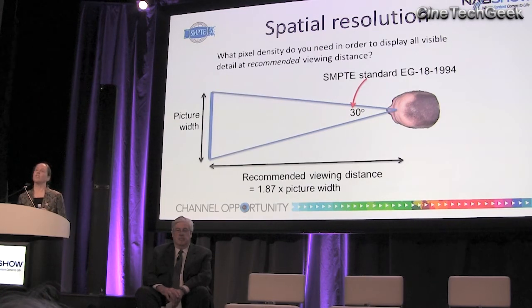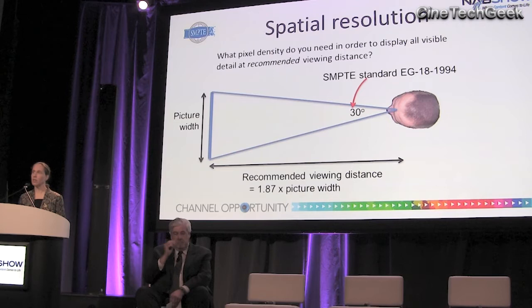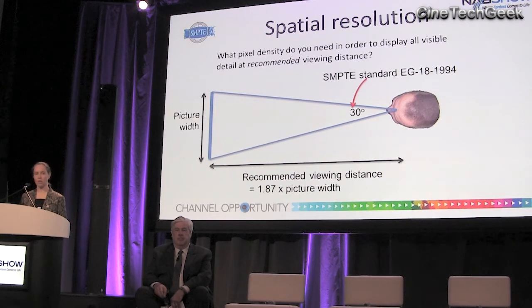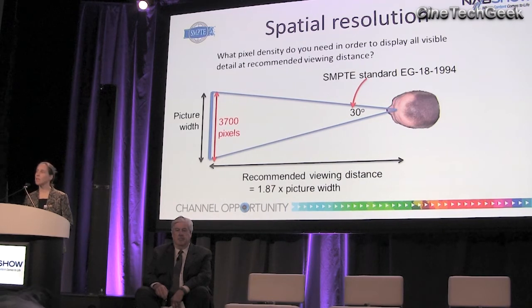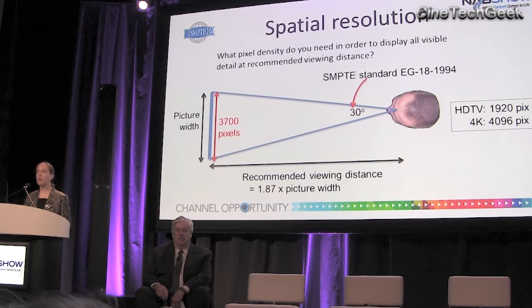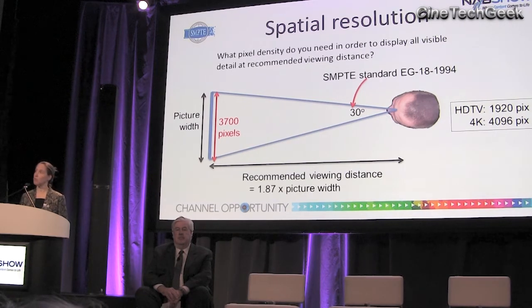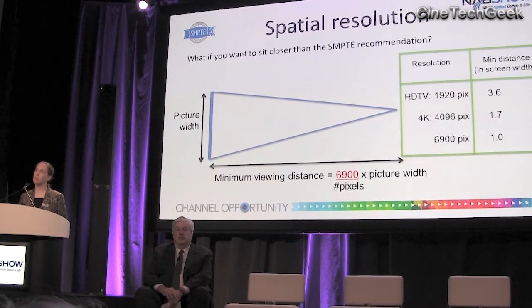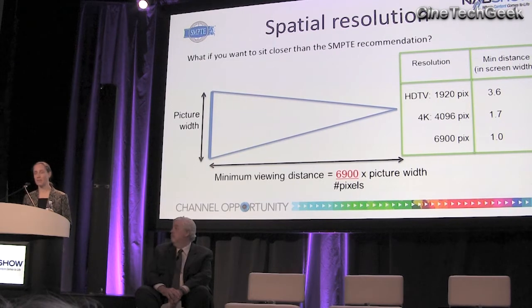We can ask what pixel density you need to display all detail at the recommended viewing distance. SMPTE recommends sitting far enough back that your screen subtends 30 degrees of your eye. Plugging that into the equations, we work out that we need something like 3,700 pixels to display all detail visible to a human. HDTV with 1,920 pixels across isn't quite there, but 4K is very much the resolution we need. Of course, not everyone will be sitting at the recommended distance — in a cinema, people at the front row will be much closer than those at the back.